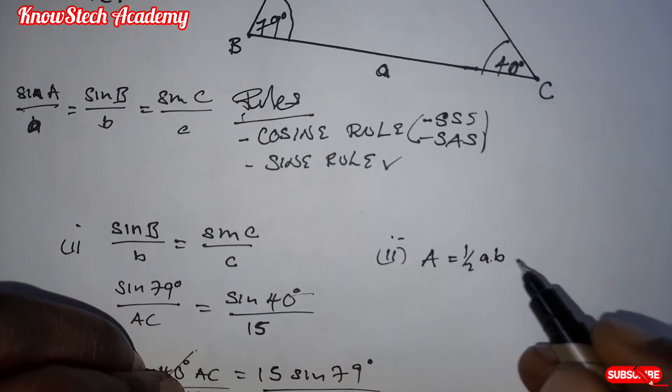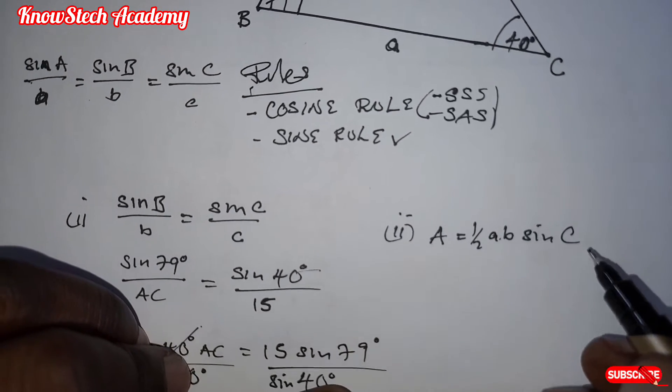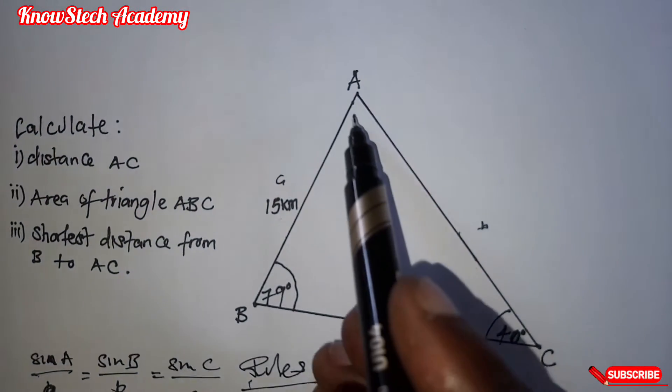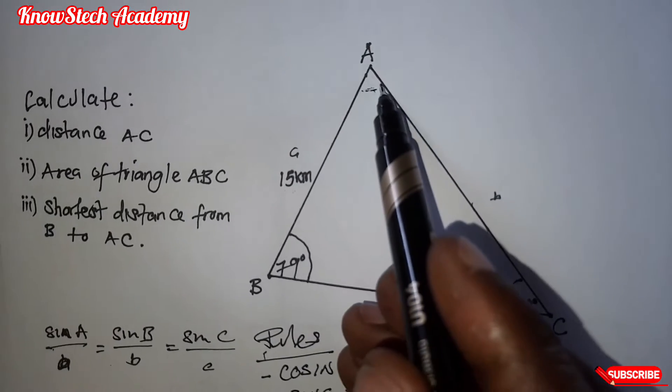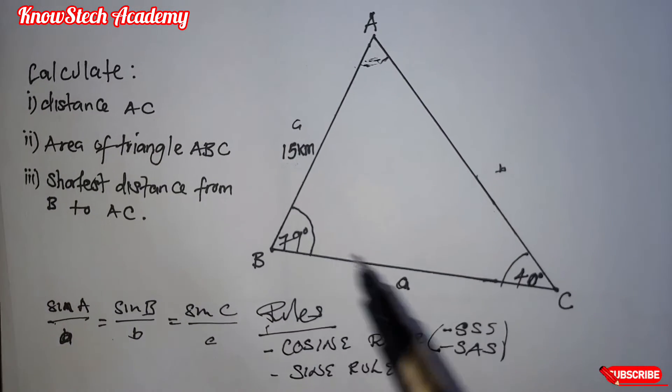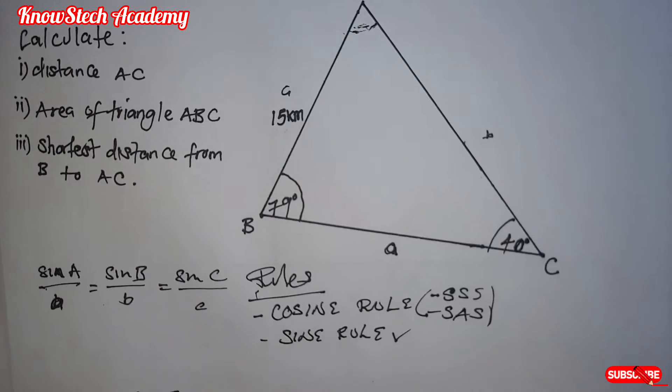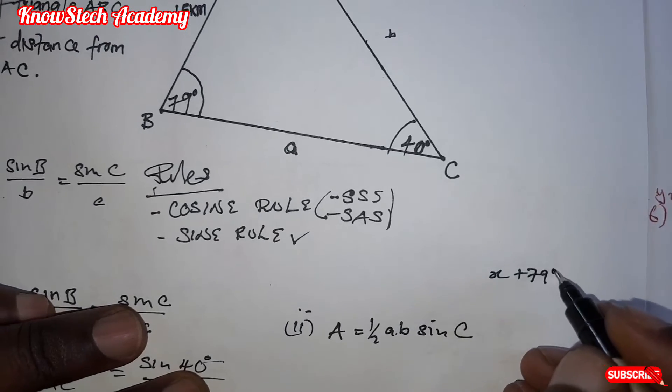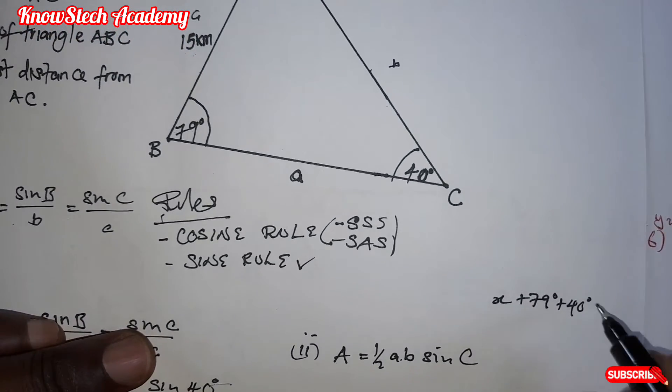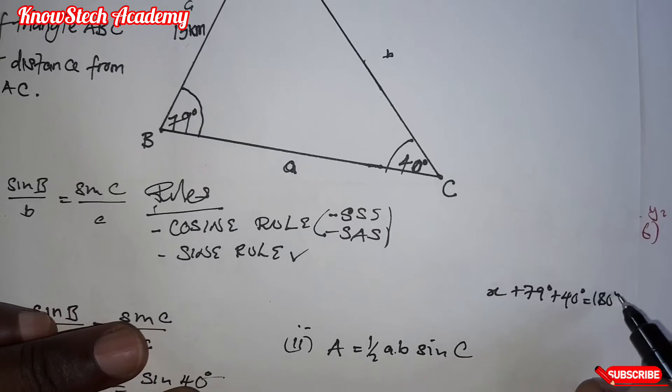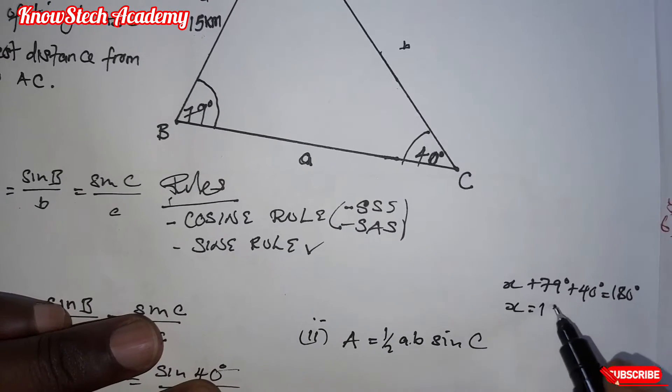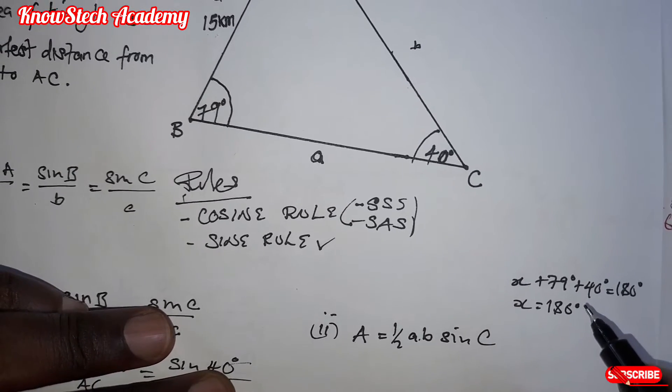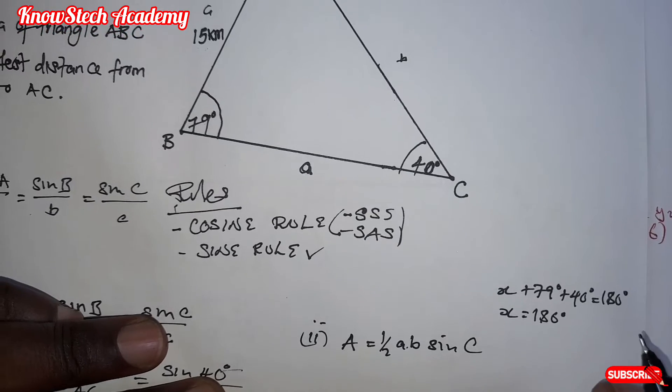So half AB sine, automatically here we are going to use angle C. This angle. Now, since we don't have this angle, we can find it by adding all the angles here. So let's just write X plus 79 degrees plus 40 degrees is equal to 180.